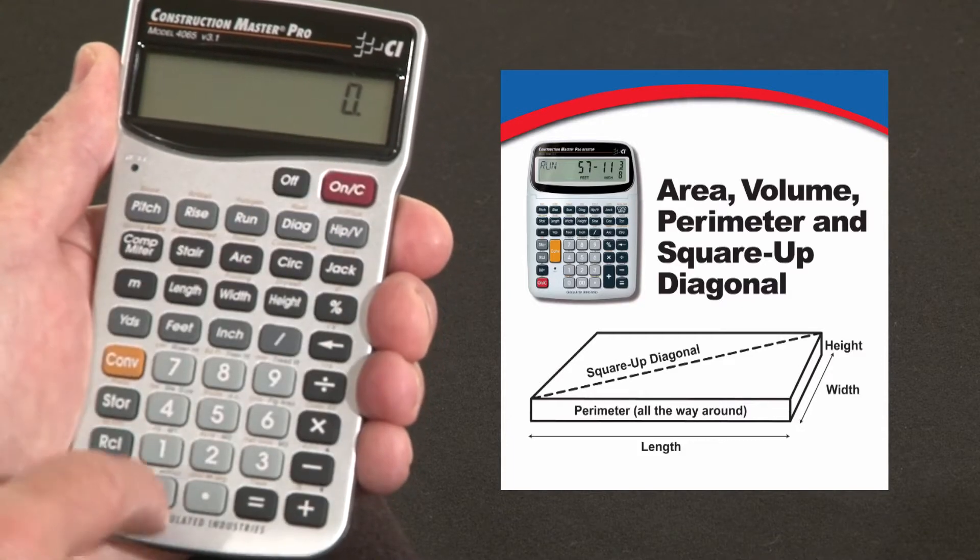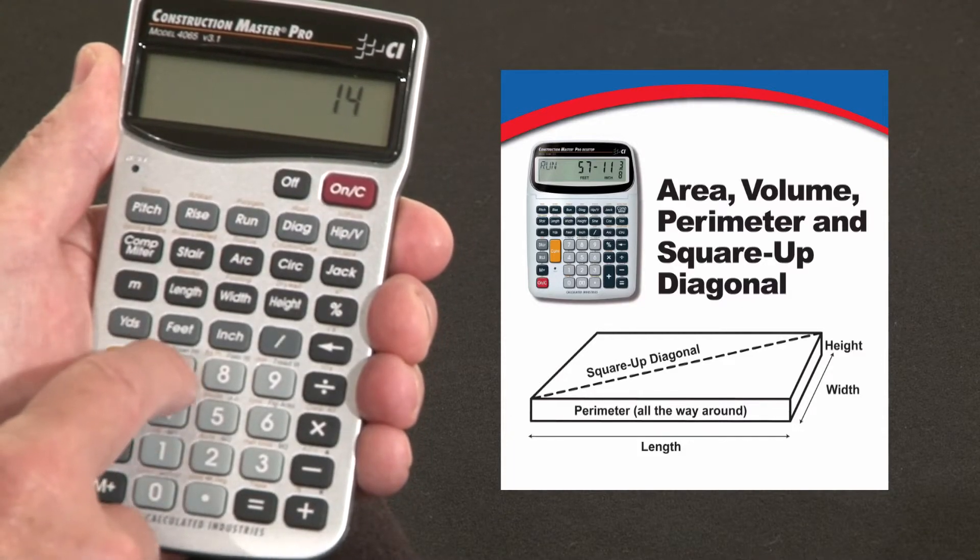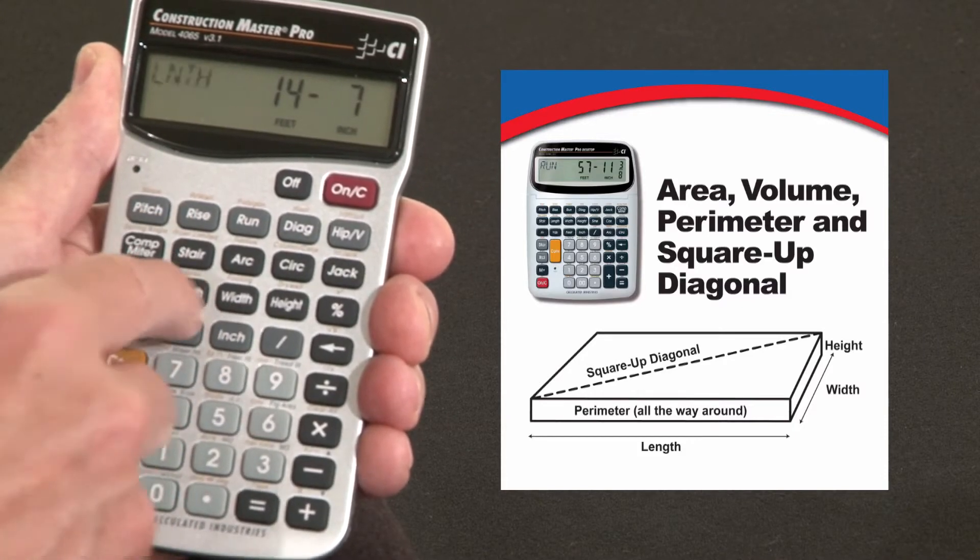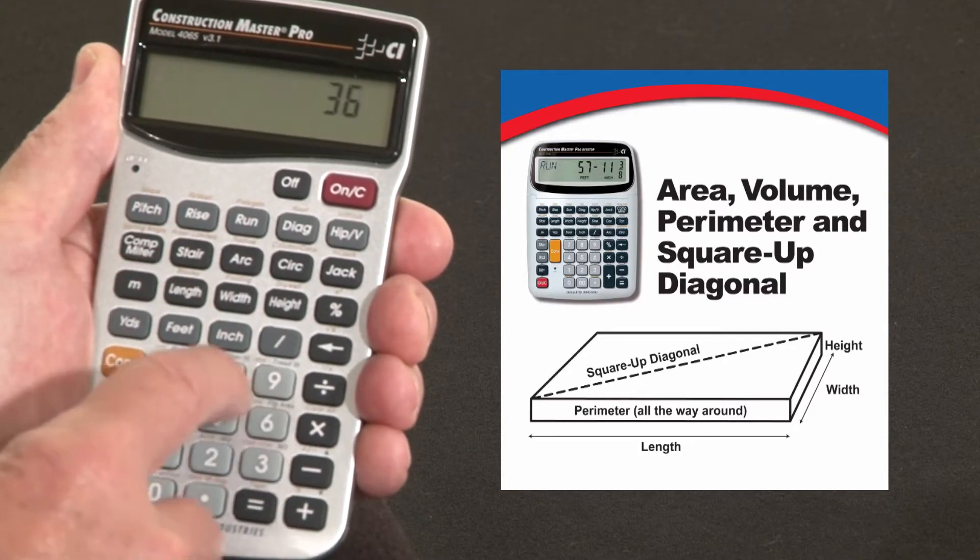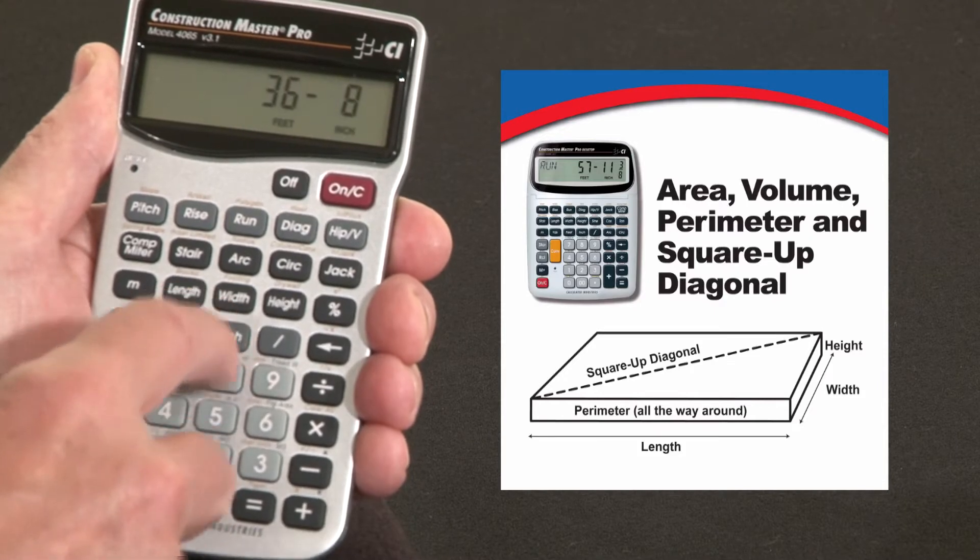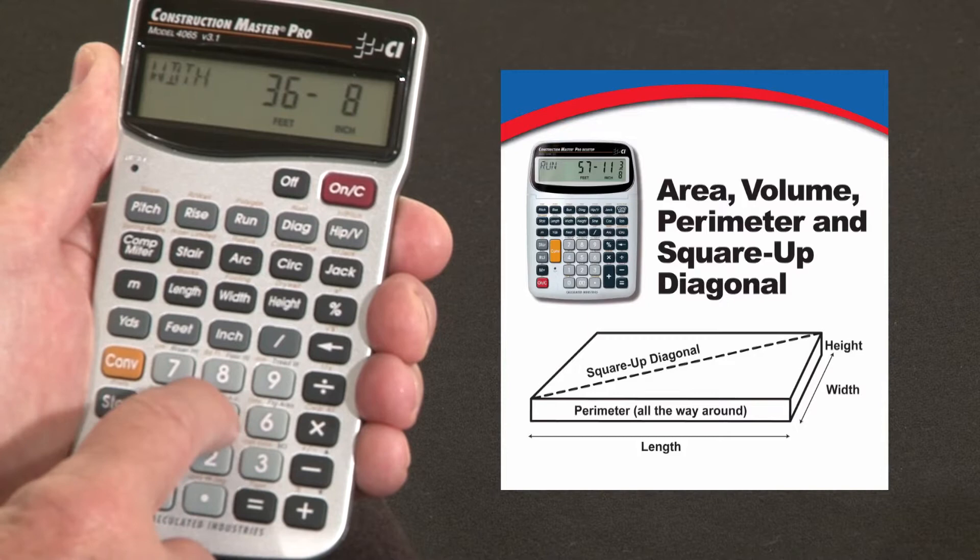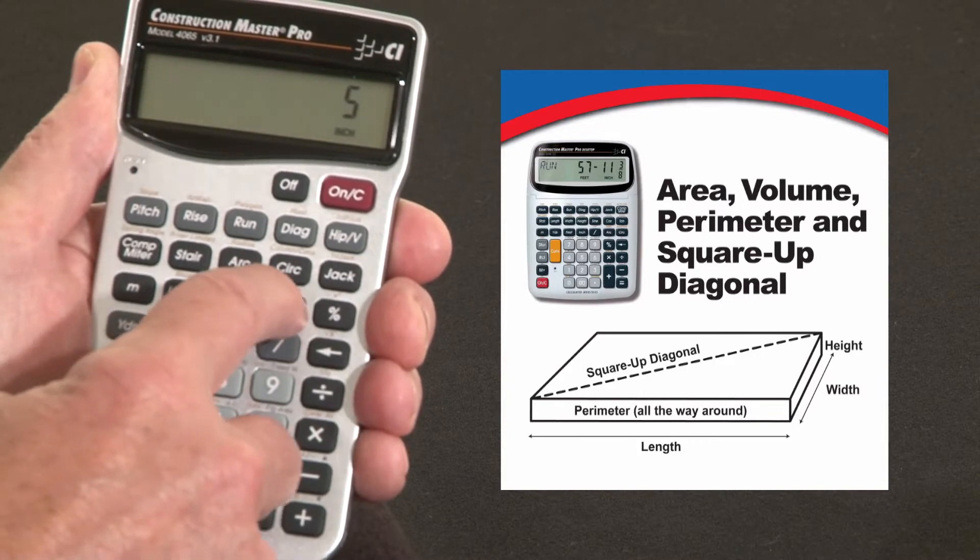Let me start off with a driveway or a pad. Let's say 14 feet 7 inches is the length and 36 feet 8 inches is the width. And let's say this is a 5 inch thick pad, 5 inches of height or thickness.